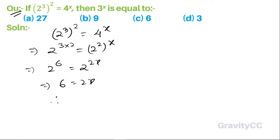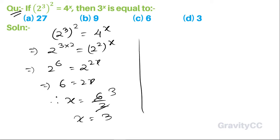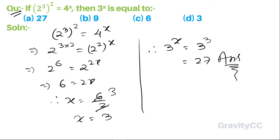Therefore x is equal to 6 divided by 2, which is 3. So 3 to the power x is equal to 3 to the power 3, which equals 27. So option A is the correct answer.